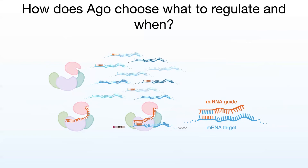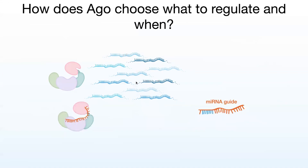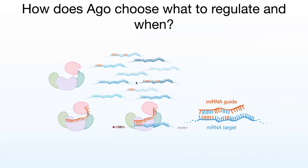You often want additional specificity, and this can be achieved by having additional pairing downstream — especially in what we call the three prime supplemental region, around nucleotides 12 to 16. This can offer additional specificity to help differentiate between targets. The differences aren't just in the targets — they're also in the microRNAs. We have microRNA families where they have the same seed sequence but differences in the rest of the length of the microRNA. In this way, you get a combinatorial effect where microRNAs in the same family can target different genes.